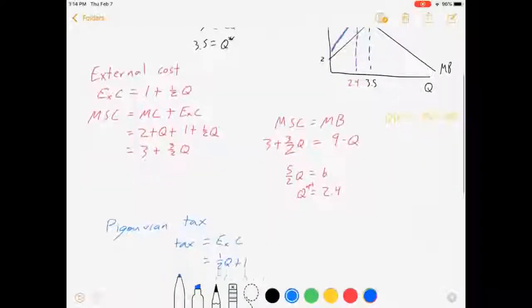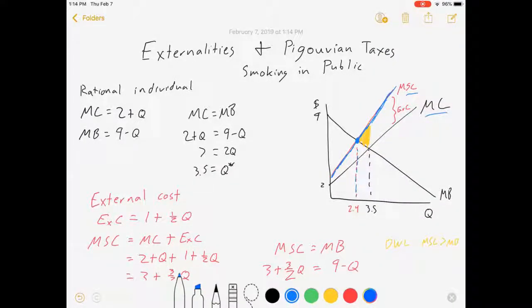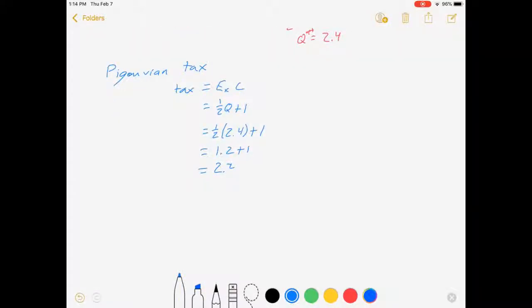Anyway, it's a simple example. It applies to lots of other things. We could also deal with situations where you could have external benefits. As a side note, markets are probably under-providing your good, and you would want to subsidize them.